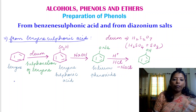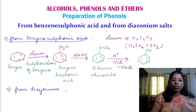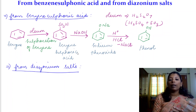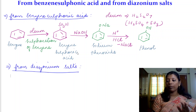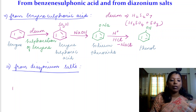Now we will see the second method of preparation: from diazonium salts. Diazonium salts are generally prepared by treating an aromatic primary amine with nitrous acid at a temperature of 273 to 278 Kelvin. Here we will take aniline as the aromatic primary amine as the starting material.